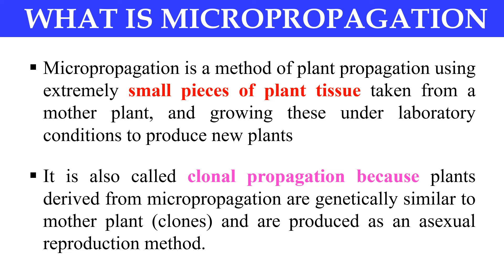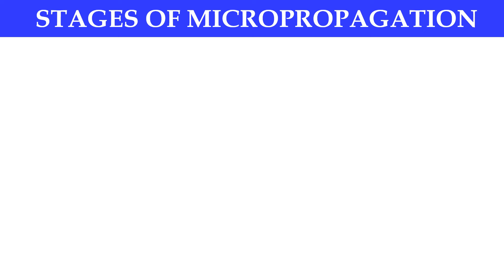Micropropagation is also called clonal propagation. Why? Because the plants produced by micropropagation are genetically identical to the mother plants — you can say these are clones of the mother plants. That is why we can say that by micropropagation we are propagating clones, and that is why it is sometimes also called clonal propagation.